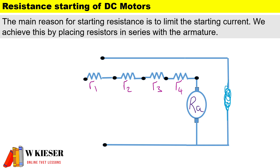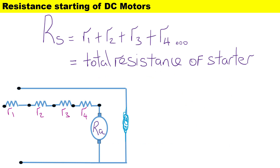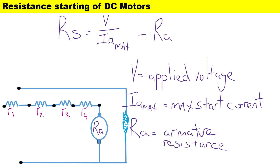In this illustration we have four elements, represented by the letter m. The number of studs will be the number of elements plus one, so in this illustration we have four elements connected in series and there are five studs. The total resistance of the starter consists of four resistors connected in series to one another.